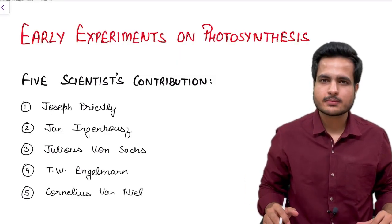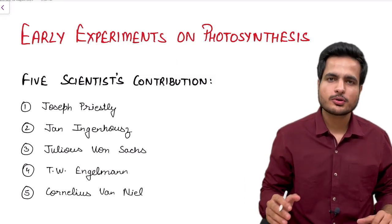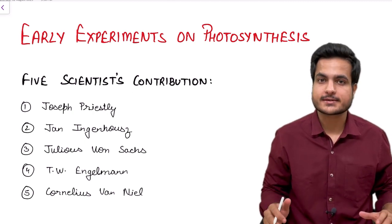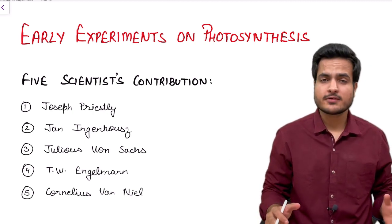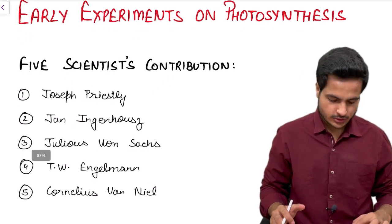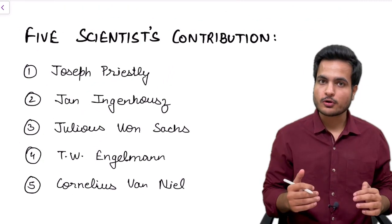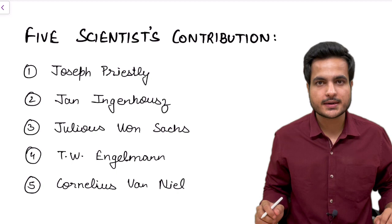Hello everyone, in this video we will be discussing the scientists who have contributed to the research of photosynthesis. According to NCERT we have to discuss 5 important scientists. Their names have been arranged in the order of the year in which they did their discovery.